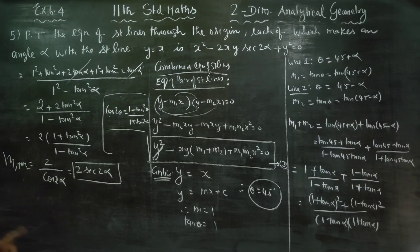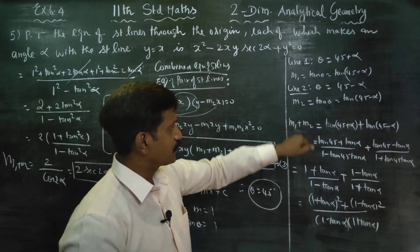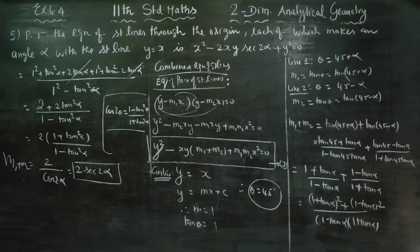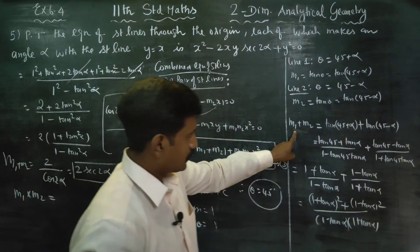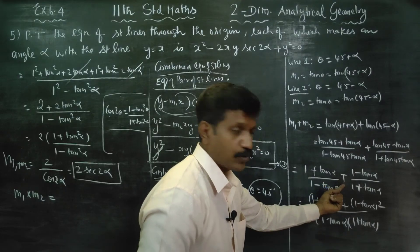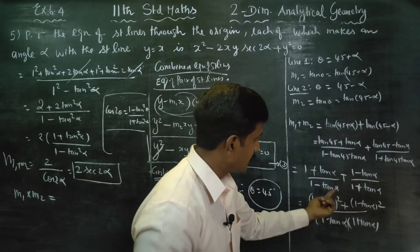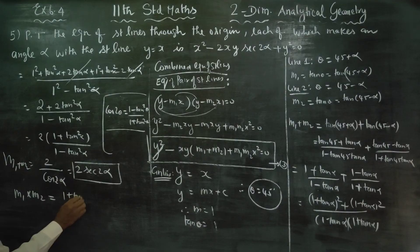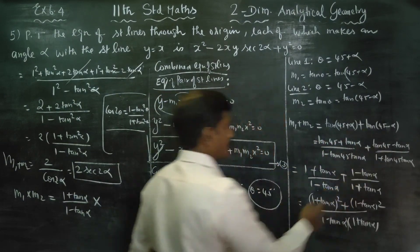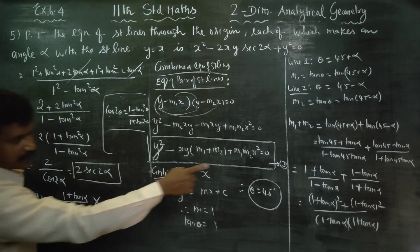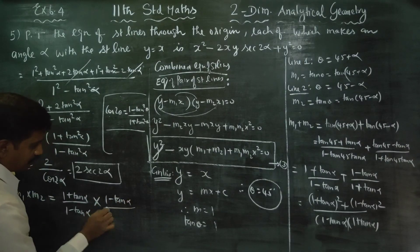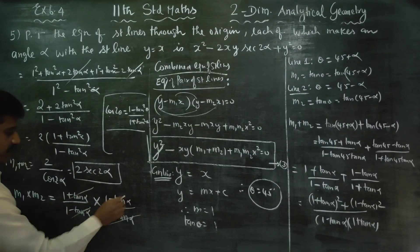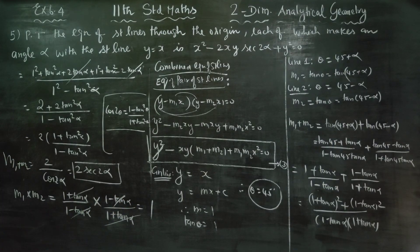For m₁m₂: m₁ × m₂ = [(1 + tan α)/(1 − tan α)] × [(1 − tan α)/(1 + tan α)] = 1. So m₁m₂ = 1.